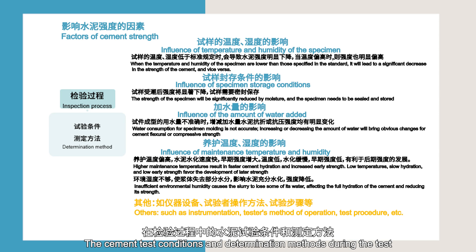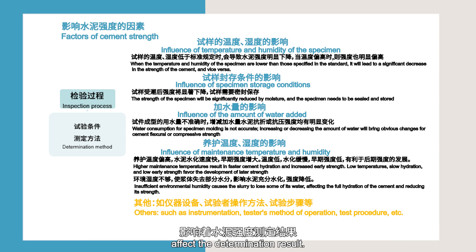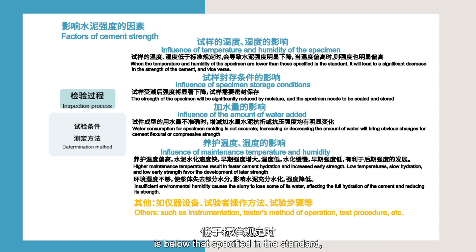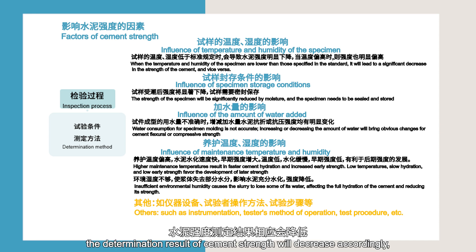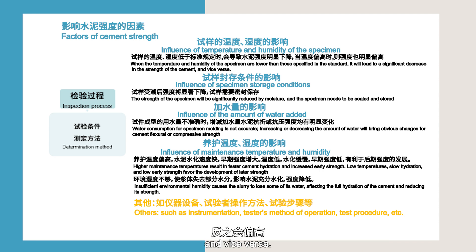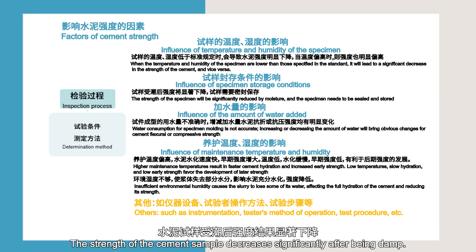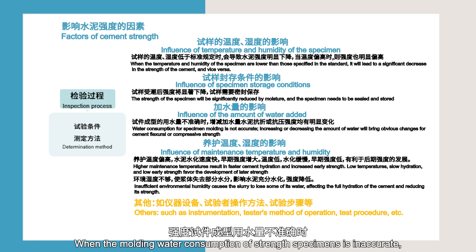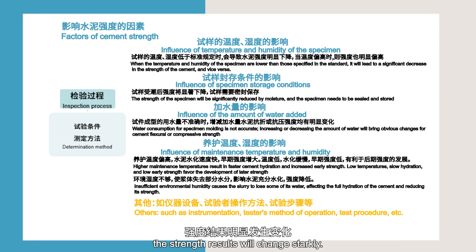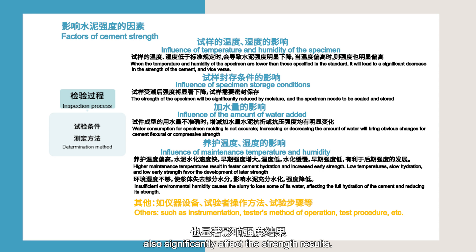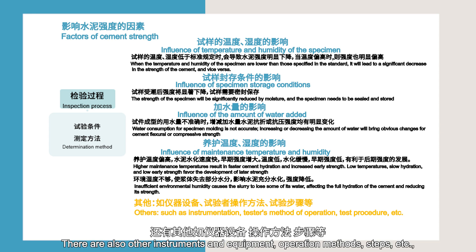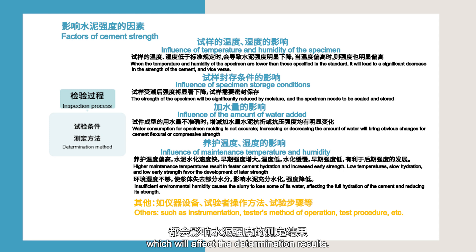The cement test conditions and determination methods during the test also affect the determination result. For example, when the test temperature of the cement sample is below that specified in the standard, the determination result of cement strength will decrease accordingly, and vice versa. The strength of the cement sample decreases significantly after being damp. When the molding water consumption of strength specimens is inaccurate, the strength results will change starkly. The curing temperature and humidity of strength specimens also significantly affect the strength results. Other instruments and equipment, operation methods, and steps will also affect the determination results.